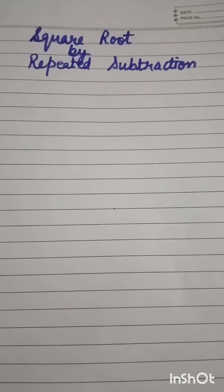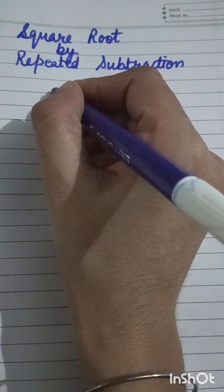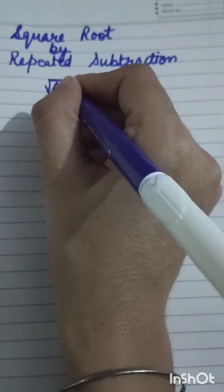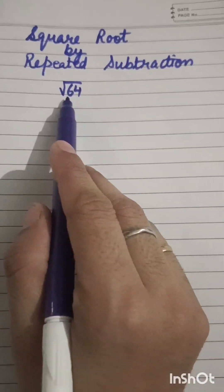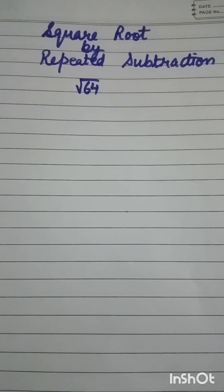We will study how to solve a small number like 64, how we will find out the square root of this number. For this, what is the method? We will subtract this number with the odd numbers starting from 1 and continue till we will get the answer 0.